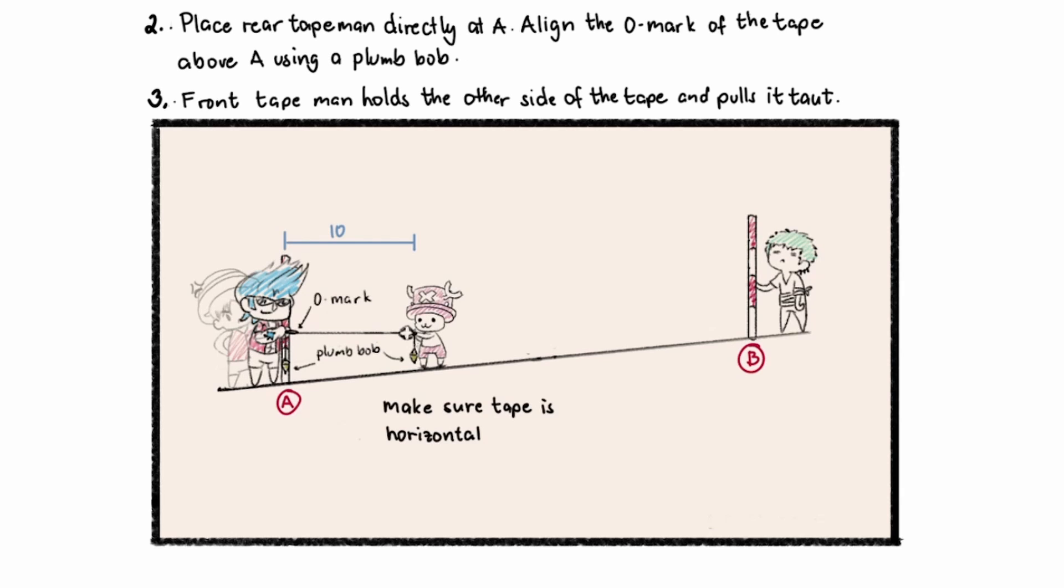Next, we place a rear tape man directly at A, align the zero mark of the tape above A using a plumb bob. And then the front tape man pulls the other side of the tape and pulls it taut. So it's the opposite from your previous fieldwork.